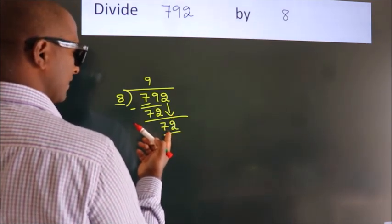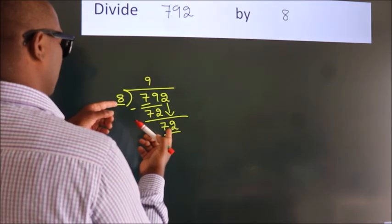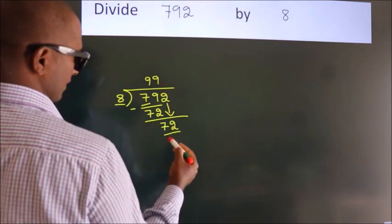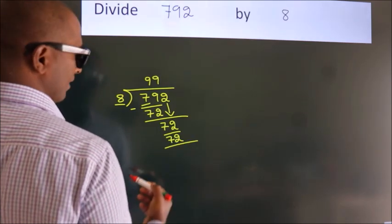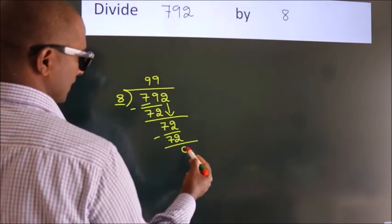When do we get 72? In the 8 table, 8 nines, 72. Now we subtract. We get 0.